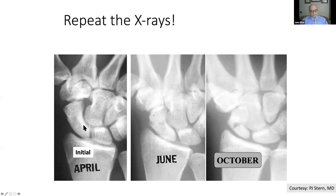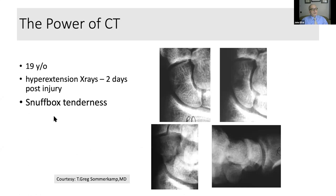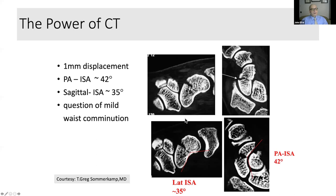CT scan is a really great study. It's very good to get in patients who have snuffbox tenderness. A case from Greg Sommerkamp shows a set of equivocal films, but his CT results showing a lateral intrascaphoid angle of about 35 degrees and an AP intrascaphoid angle of about 42 degrees provide excellent diagnostic information, surgical planning value, and high resolution.